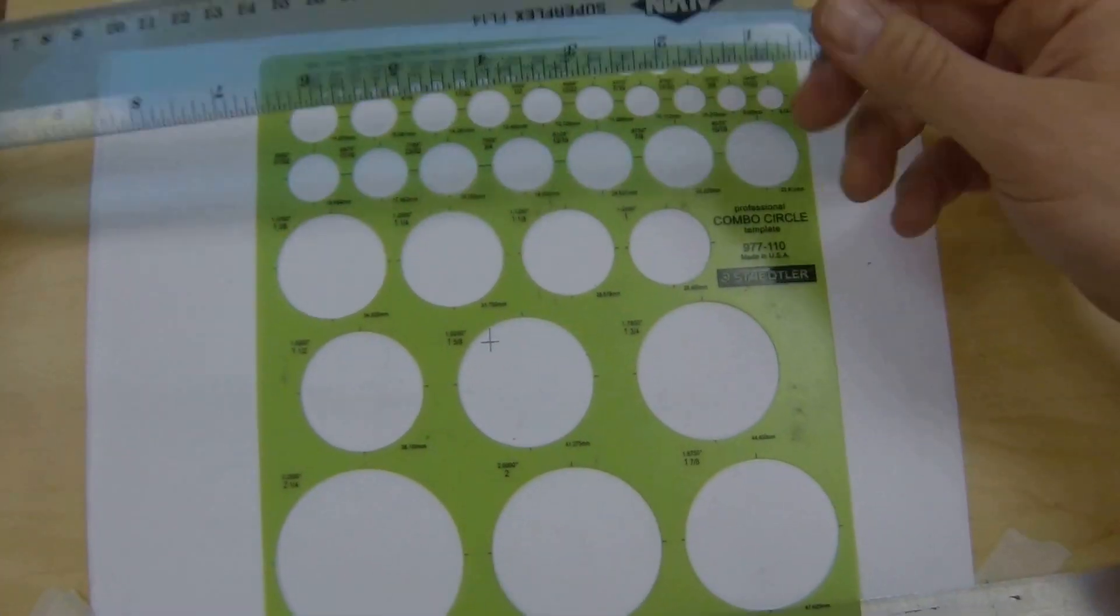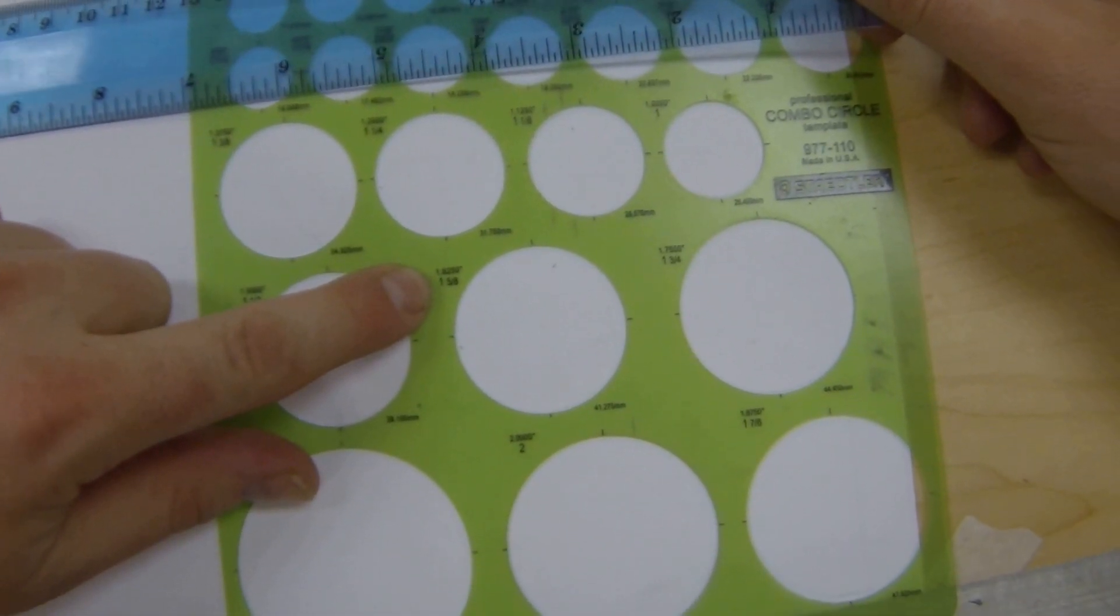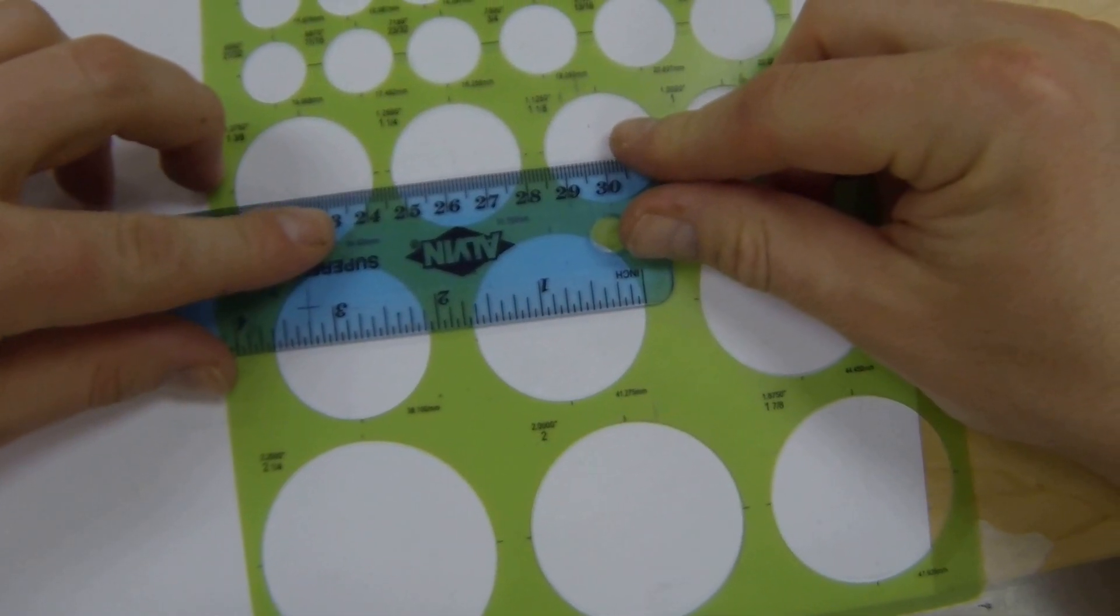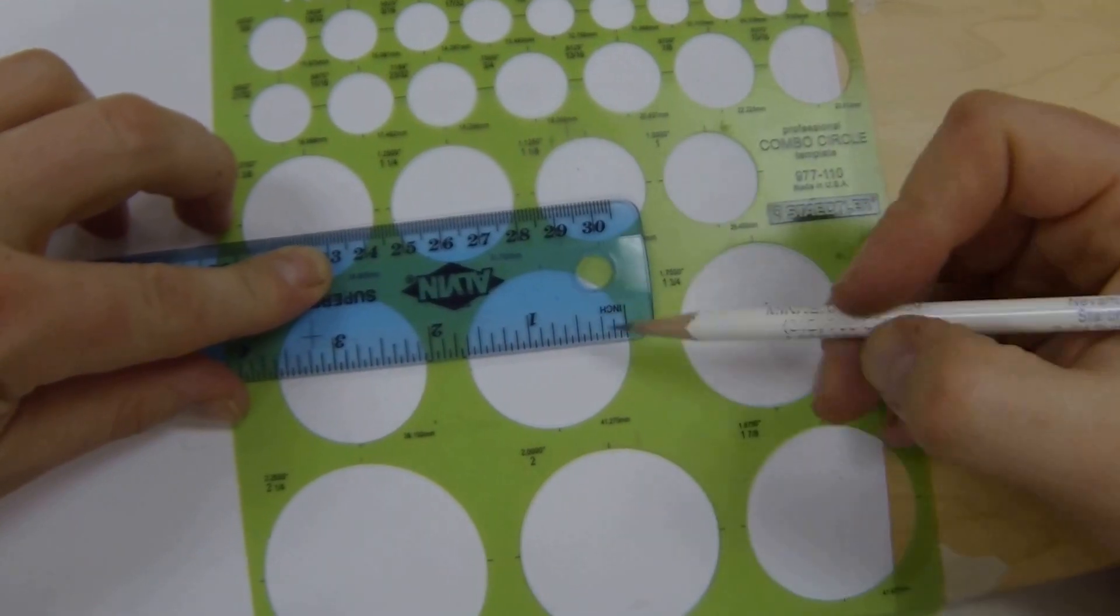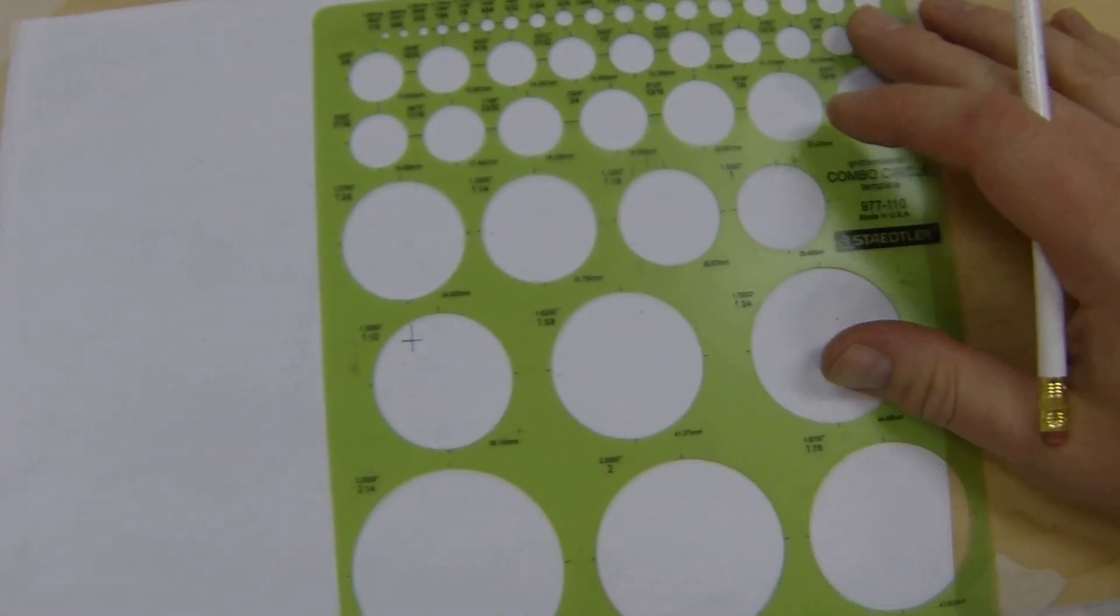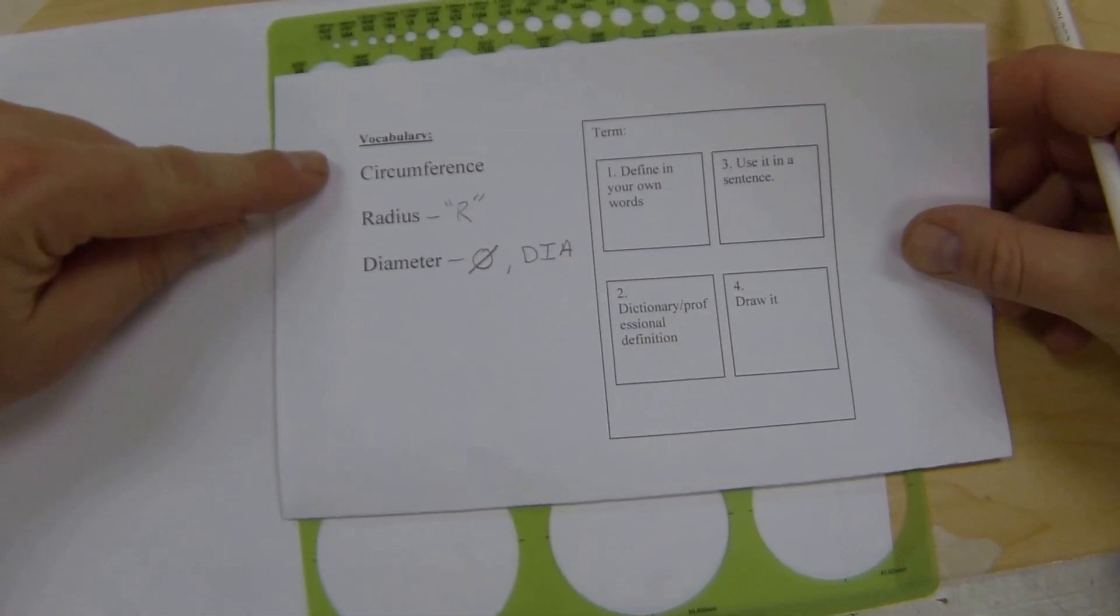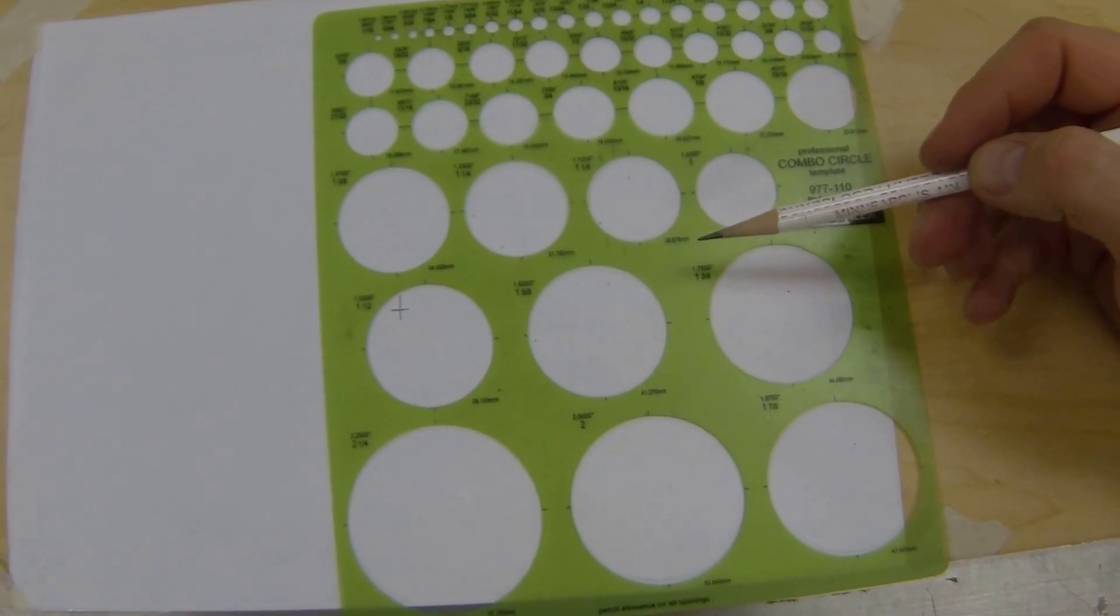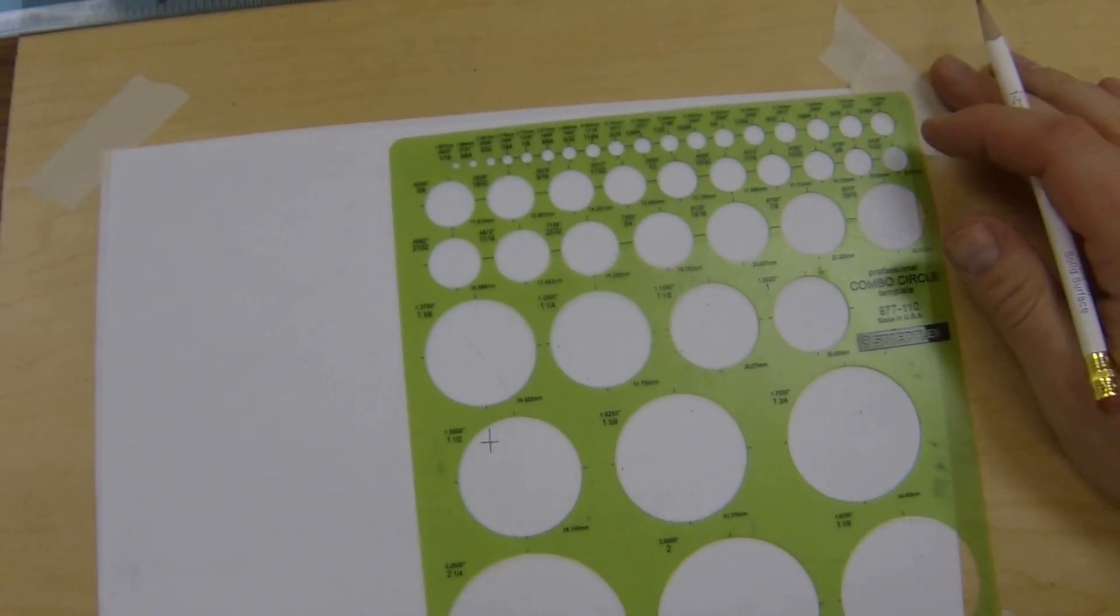I'm going to take my scale and show you something. We're going to look at this circle right here - it says one and five-eighths on it. If I measure from edge to edge through the center of the circle, it's going to come out to be one and five-eighths on the opposite side. Look at that measurement. With that bit of knowledge, back to your vocabulary, you should be able to identify the sizing for this tool whether it's circumference, radius, or diameter. Once you understand that, it'll help you.